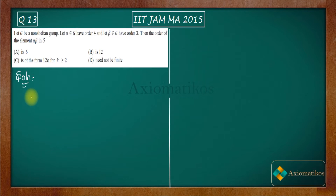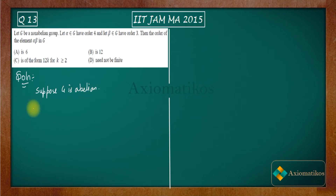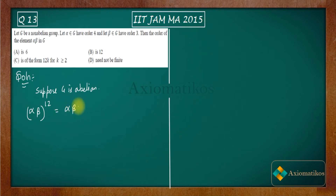Let me explain why the non-abelian condition matters. Suppose G is an abelian group. If G is abelian, you can take the product alpha beta and multiply it up to 12 times — you get alpha beta, alpha beta, and so on, 12 times in total. Since the group is abelian, you can shift all the alphas to the left-hand side.